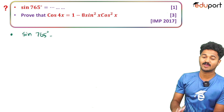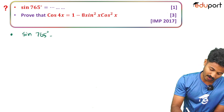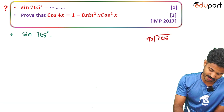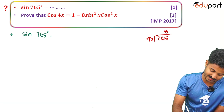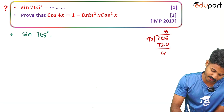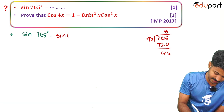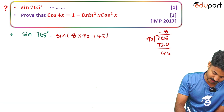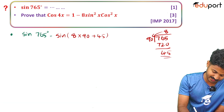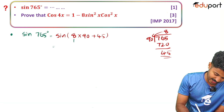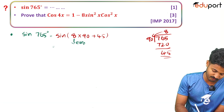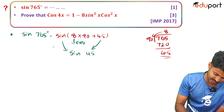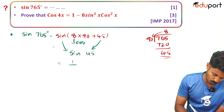Find sin(765°). For large angles, divide: 765 ÷ 90 = 8 remainder 45. So sin(765°) = sin(8×90° + 45°). Since 8 is even, the function does not change, so it remains sin(45°) = 1/√2.